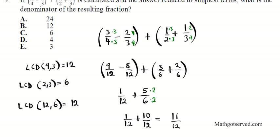And then your final answer is 11 over 12. The question asks, what is the denominator of your result in fractions? So the denominator is all we care about. The denominator is 12 so that's your answer. So our answer is B.